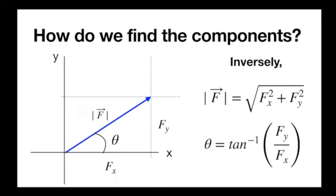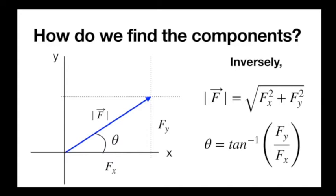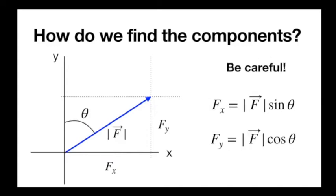For the angle, we use inverse tangent of opposite over adjacent. I've written fx equals f cos theta, fy equals f sin theta, and theta equals tan inverse of fy over fx. But what if I labeled theta as a different angle? Now they switch — fx comes from sin theta because the opposite side is now fx and the adjacent is fy. So don't just memorize x goes with cosine or y goes with sine, because it's not true. Sine goes with the opposite side, cosine with the adjacent — it just depends on which angle you're given.